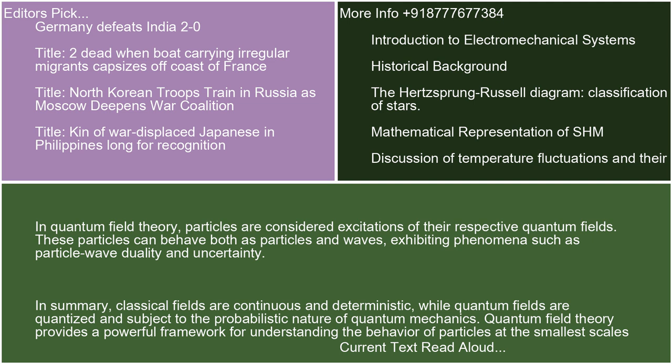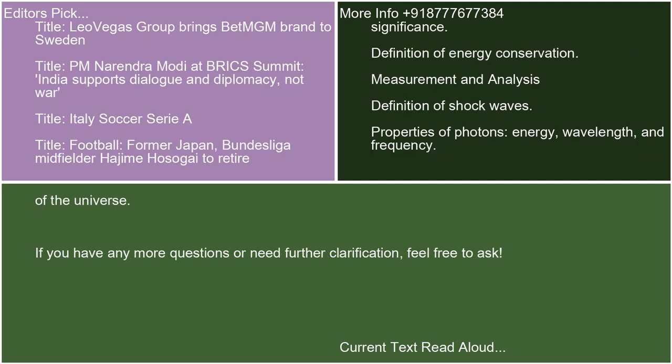In summary, classical fields are continuous and deterministic, while quantum fields are quantized and subject to the probabilistic nature of quantum mechanics. Quantum field theory provides a powerful framework for understanding the behavior of particles at the smallest scales of the universe. If you have any more questions or need further clarification, feel free to ask.